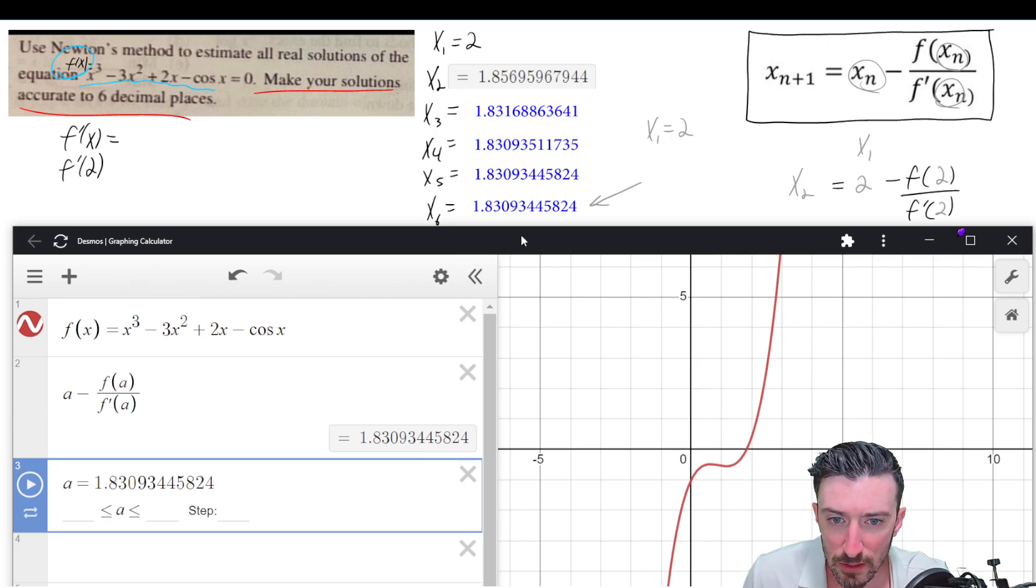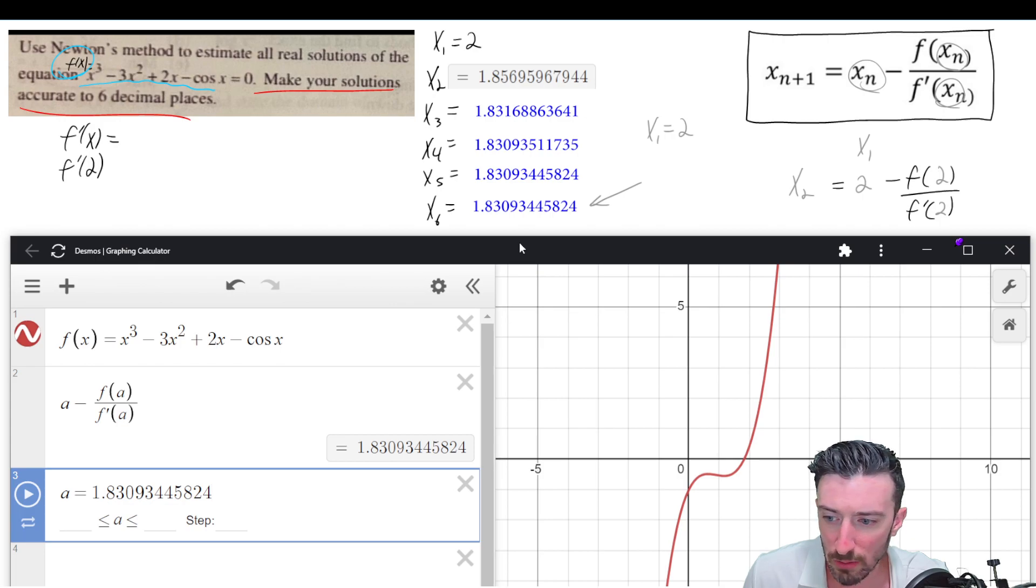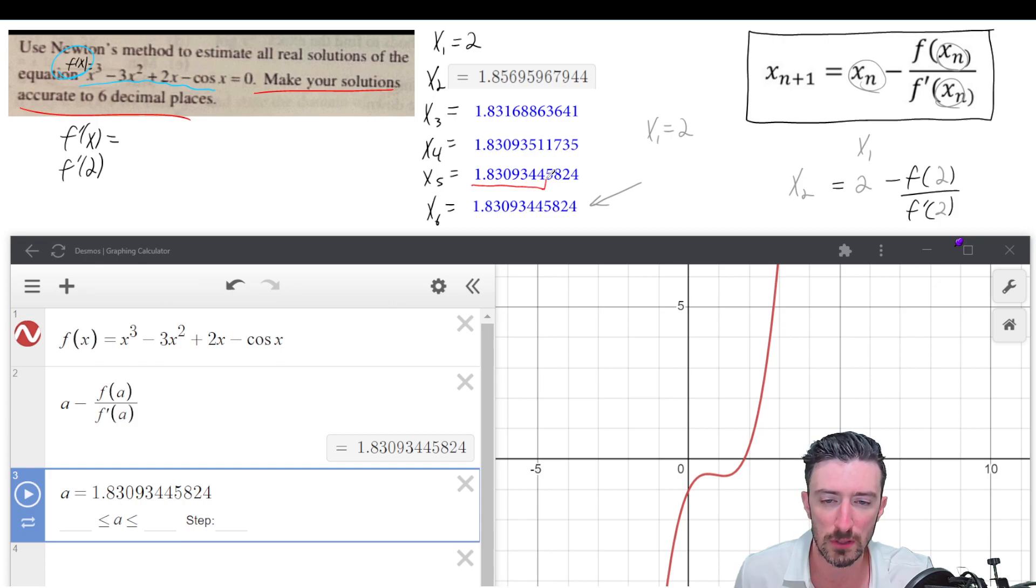It is now getting to the point where we are done. We got the first six decimal places to be the same there. In fact, we even got seven to be the same. Three, six, seven. Yeah. So we are lighting it up. So they want our solution to be accurate to six decimal places. So this is it. This is our guy.